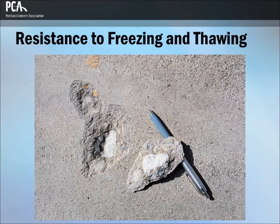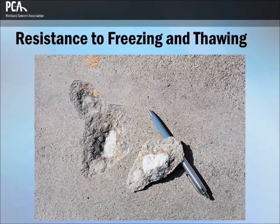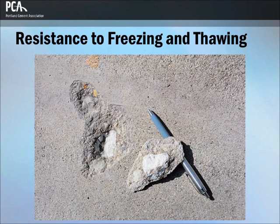If a single problem particle is near the surface of the concrete, it can cause a pop-out as shown here. Pop-outs generally appear as conical fragments that break out of the concrete surface. The offending aggregate particle, or part of it, is usually found at the bottom of the resulting void. The critical size at which an aggregate will fail is dependent upon the rate of freezing and the porosity, permeability, and tensile strength of the particle.